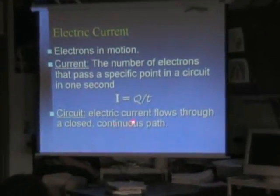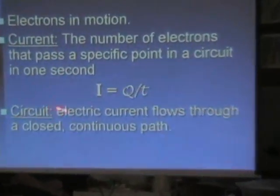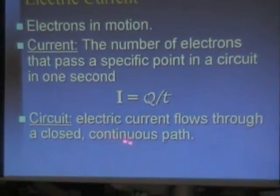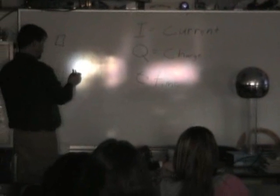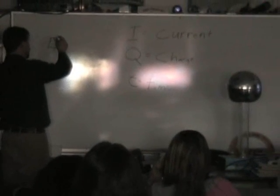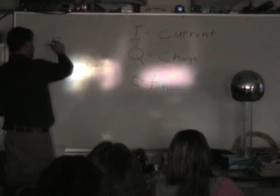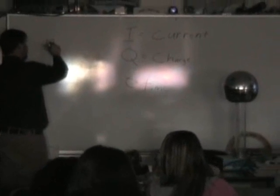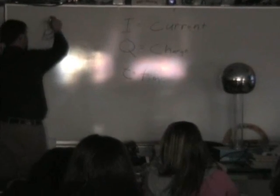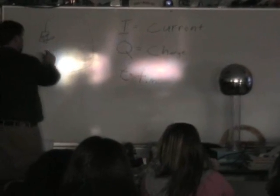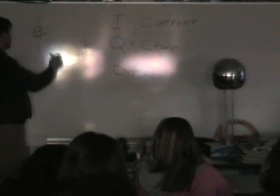Electric current flows through a closed, continuous path. We can have a battery or we can have a generator, but what we have is a power source — a source of electricity, a volt source. A circuit needs to start on one point and go all the way around to the other side. The circuit has to be closed.